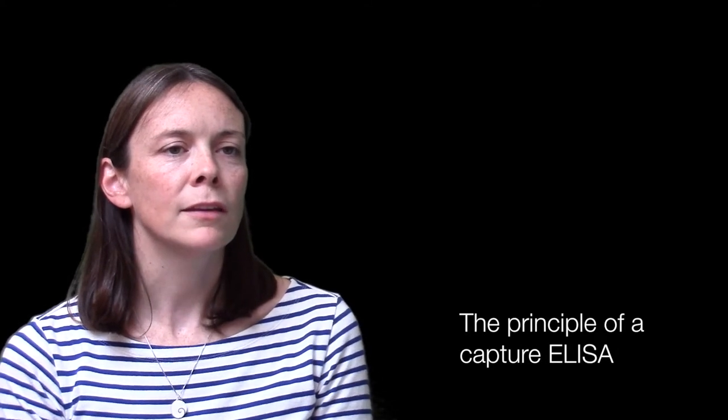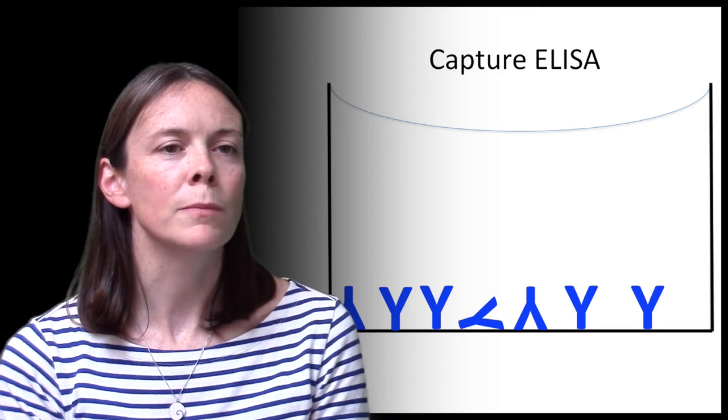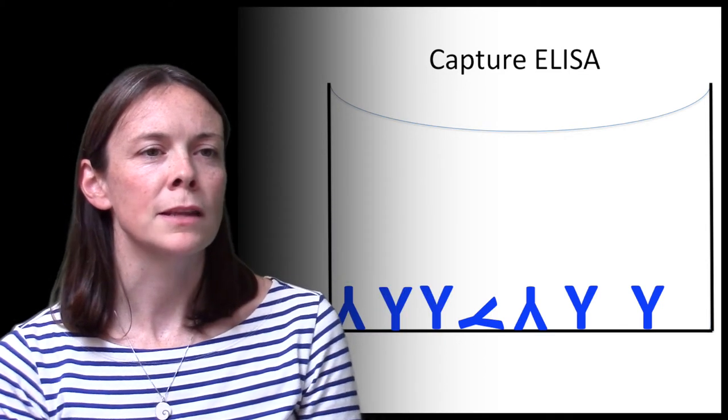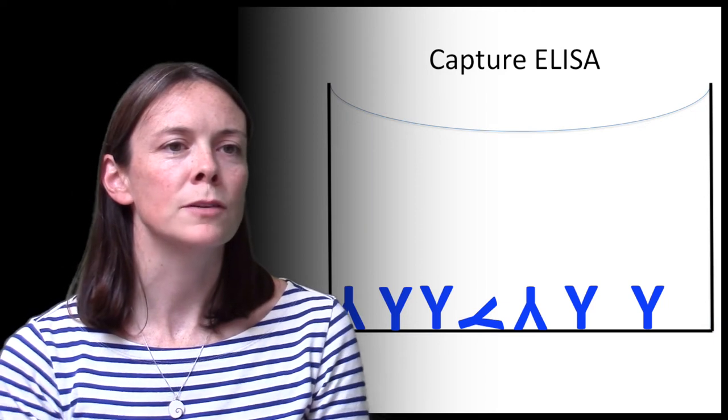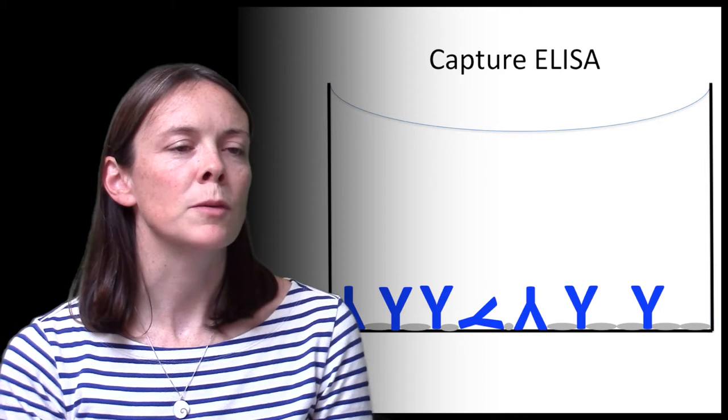In a capture ELISA, an excess of antibody specific to your protein of interest is bound to special high protein binding plates such as this one here. Unbound antibody is then washed off and any areas of the plate not bound by antibody are blocked using a non-specific protein such as serum albumin.